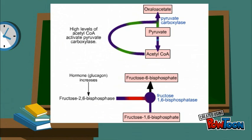Control of gluconeogenesis occurs at two major points: at the pyruvate carboxylase step and at the fructose-1,6-bisphosphatase step.